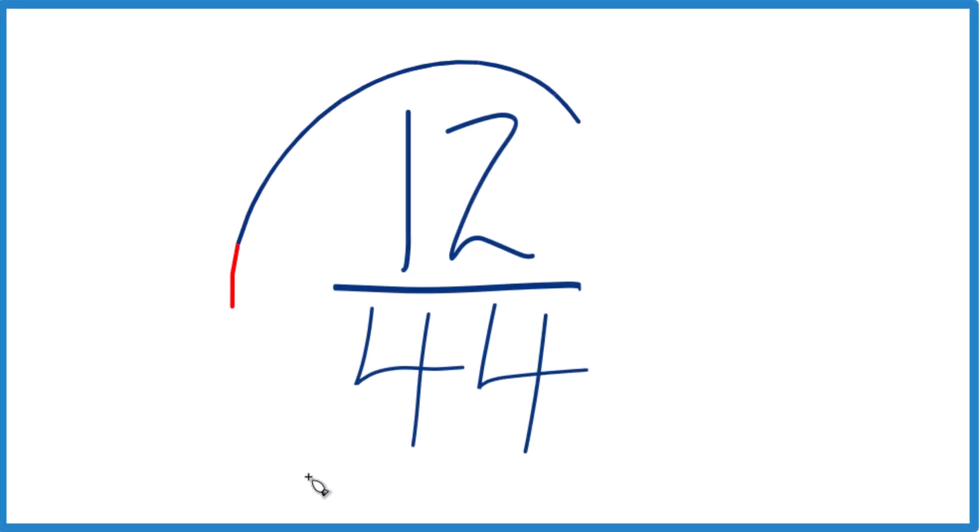Let's simplify the fraction 12/44. So if you have 12/44, how do we reduce this or simplify it down to lowest terms? What we need to do is find a common factor, something that goes into both 12 and 44 evenly. And we're looking for the greatest common factor.